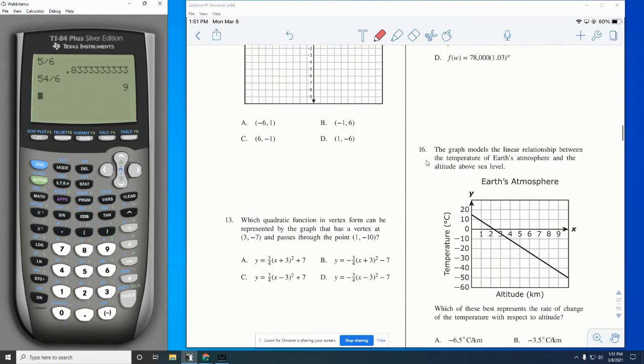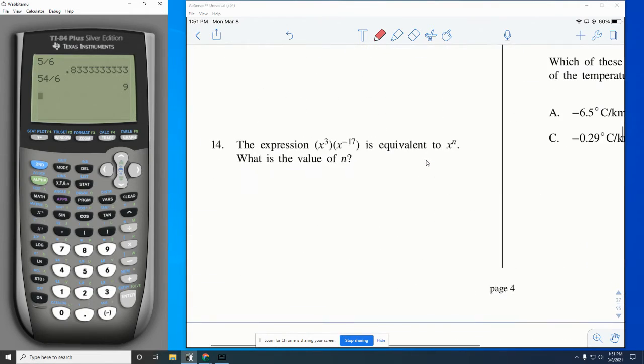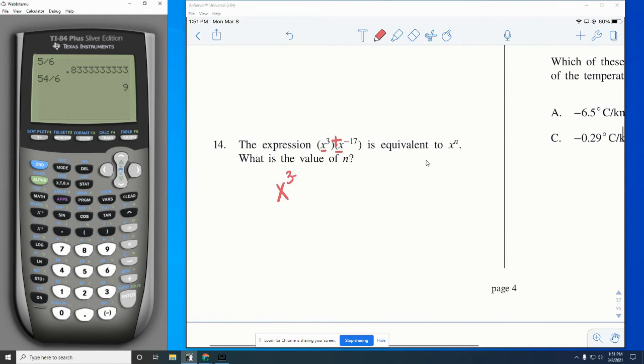We're going to look at another exponents one, number 14, so just the next page over. This expression, x^3 times x^(-17), is equivalent to x^n. What is the value of n? So when I look on my formula chart, I see that any time I have the same basis, there's just enough room for addition. So to simplify this, I'm going to do 3 plus negative 17, and I get negative 14.